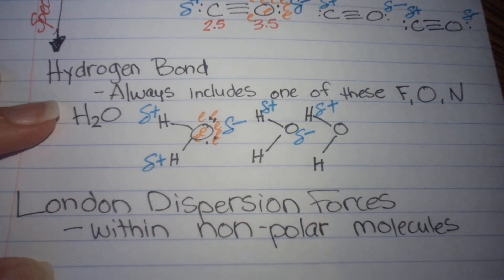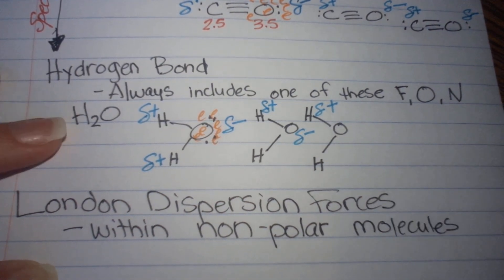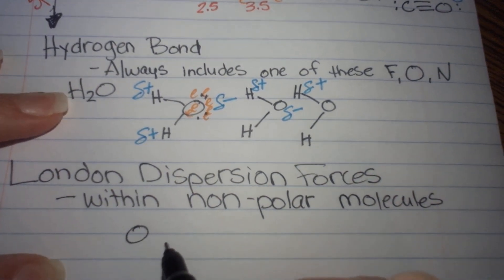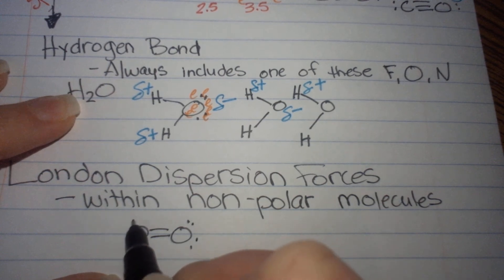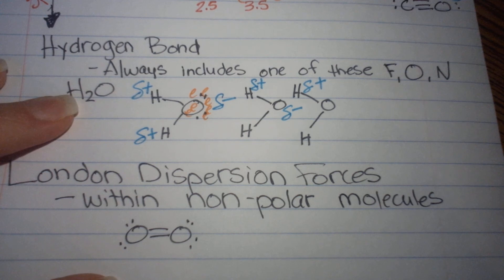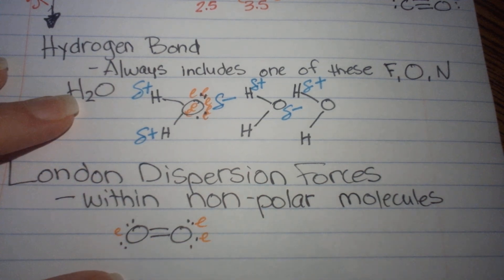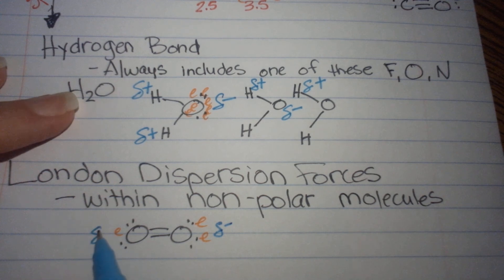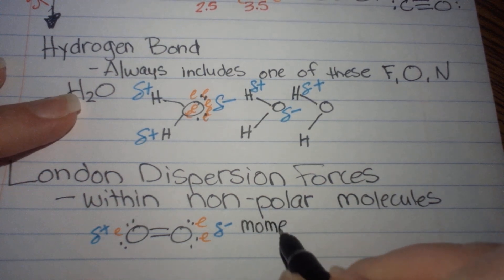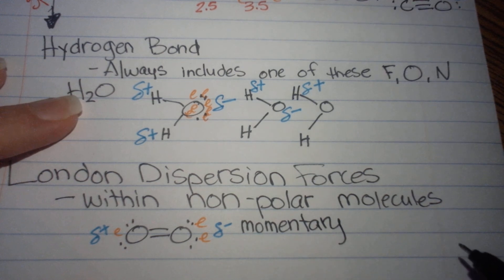Wait — if it's non-polar, it doesn't have a dipole. So how does that even work? If we have oxygen gas, it's the same element with the same electronegativity, and both atoms want the electrons equally. But momentarily, you might have more electrons on one side than the other, so you would have a very faint, momentary partial negative and partial positive. This is called a momentary dipole.